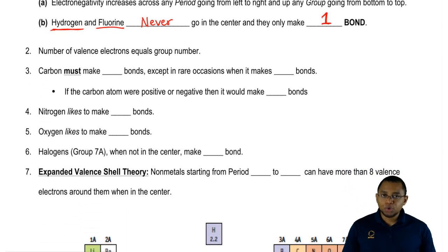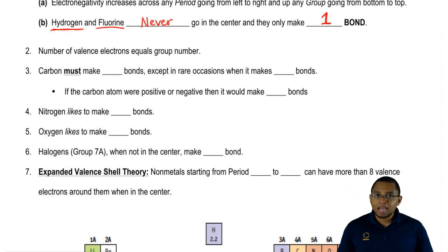Next, we're going to say rule two: the number of valence electrons that an element has is equal to its group number. You're not going to see bonds between transition metals, so don't worry about that.